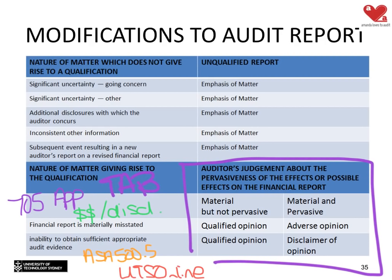ASA 706 covers situations where the auditor wants to give shareholders extra information through an emphasis of matter paragraph or other matter paragraphs. This can be added to any opinion type. Examples include: the company is struggling financially and may not survive 12 months; the client has just invested $2 billion in a joint venture with questionable viability; or there is inconsistent information in the annual report — for example, the company is making a loss but the front section of the annual report is presenting a positive picture.